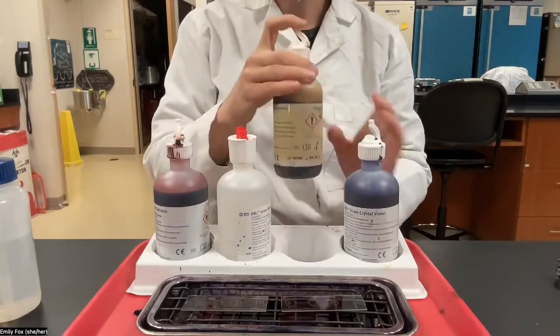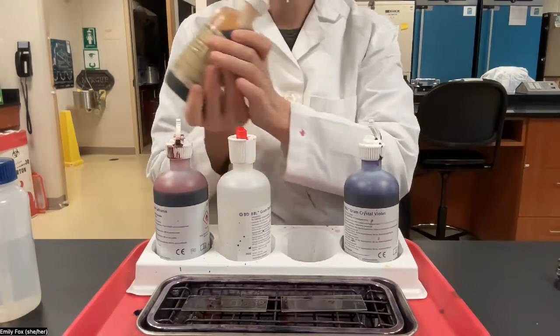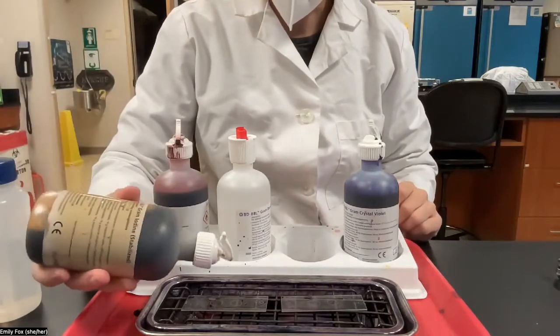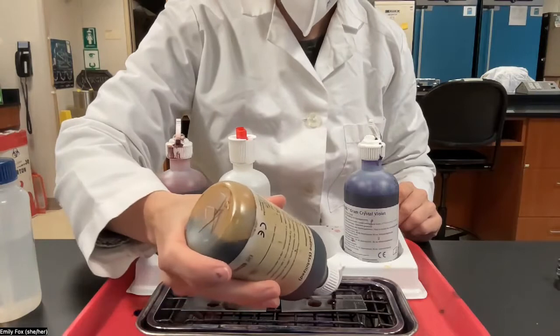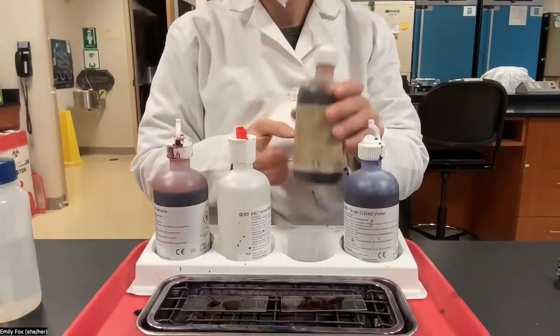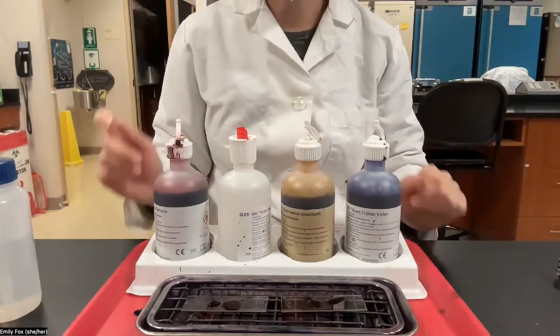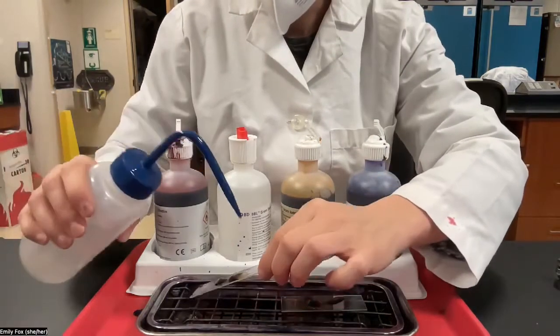We can just move straight to the next step, which is adding iodine. So now we'll do iodine for one minute. Again, just make sure you cover your two circles on each slide. That is enough. So now set your timer for one minute. And we're ready to rinse.